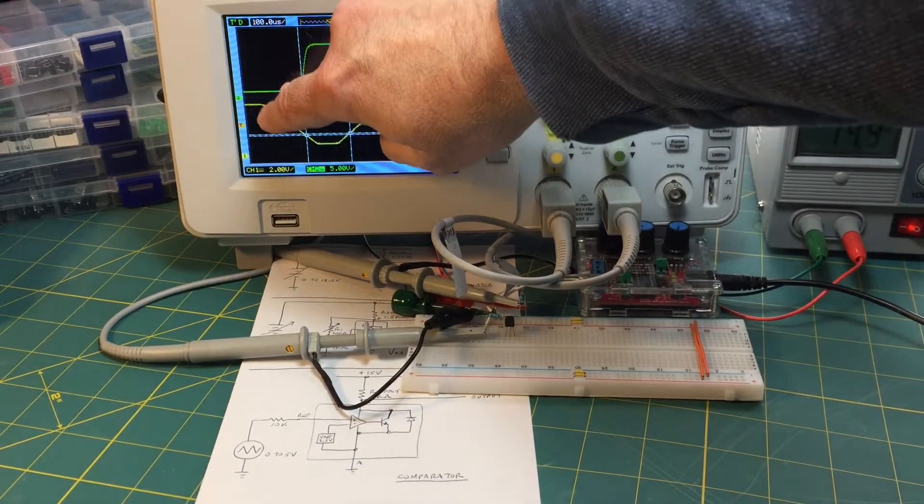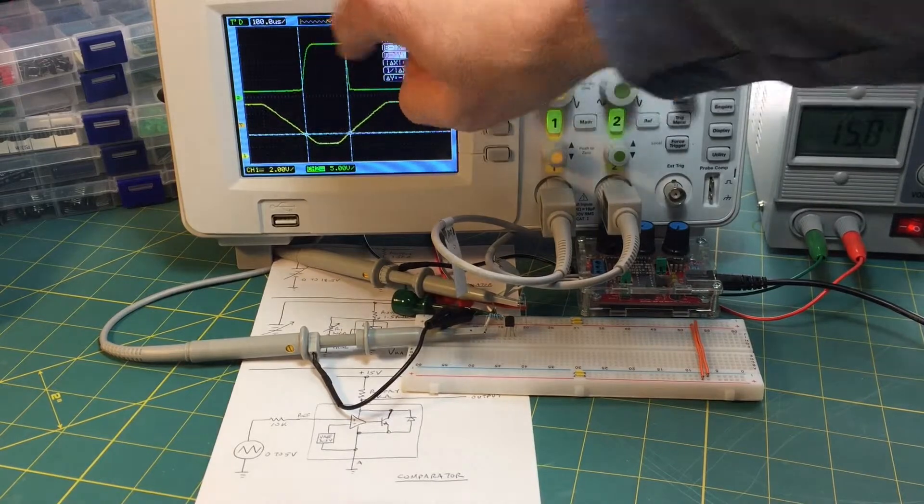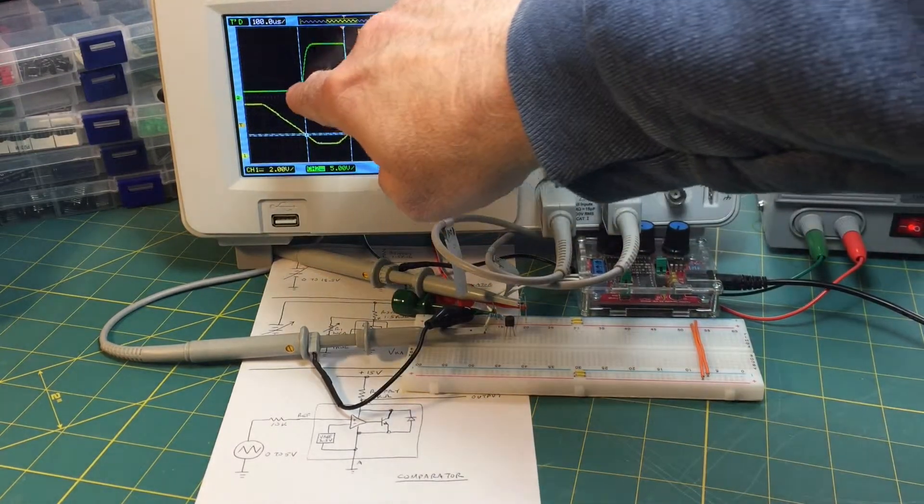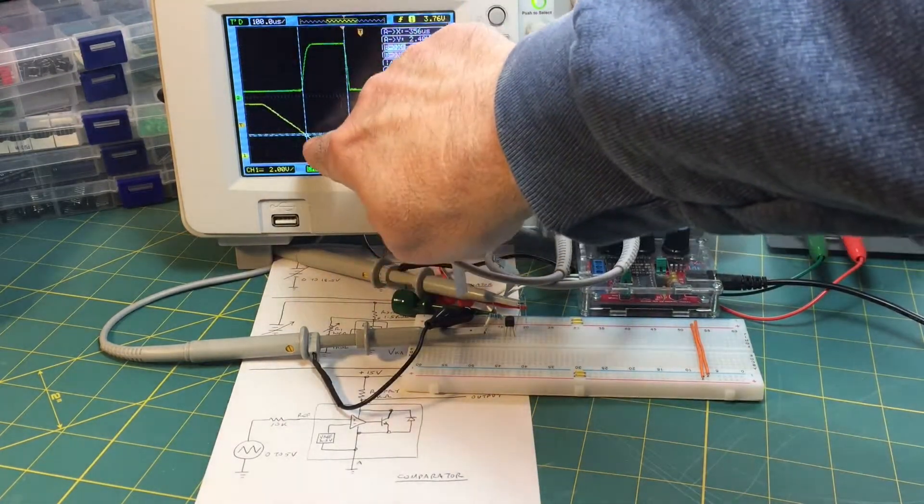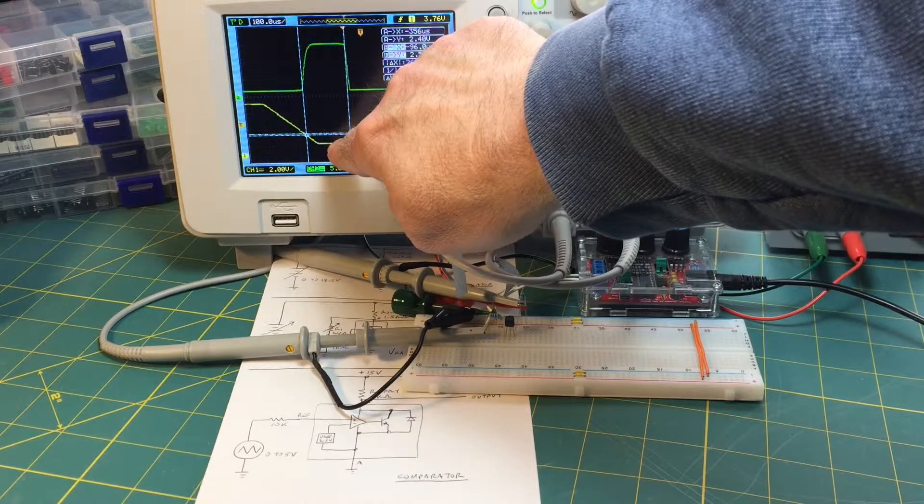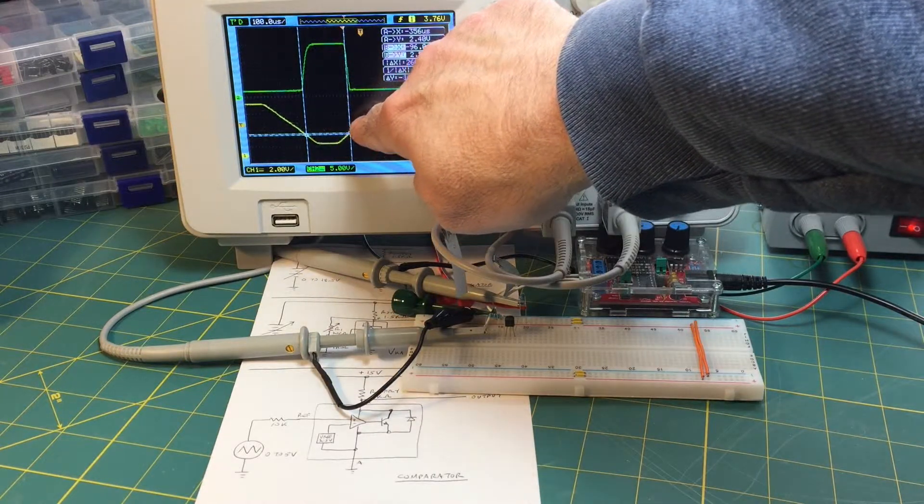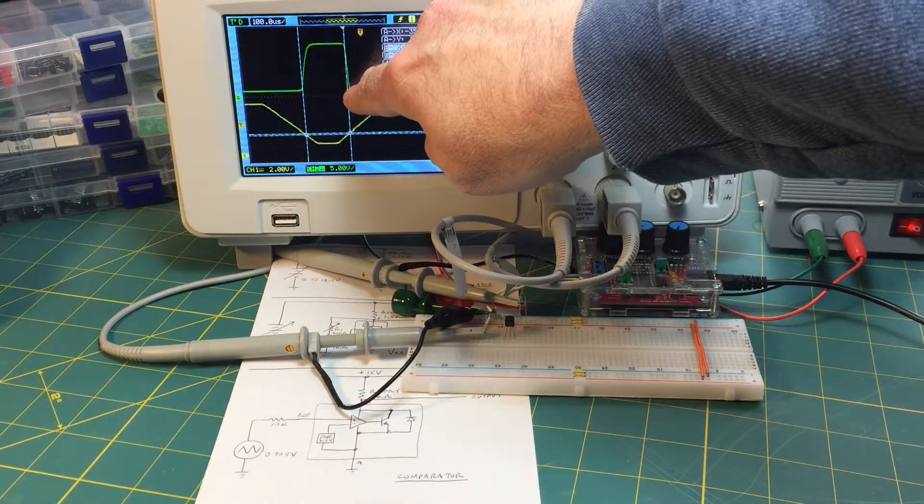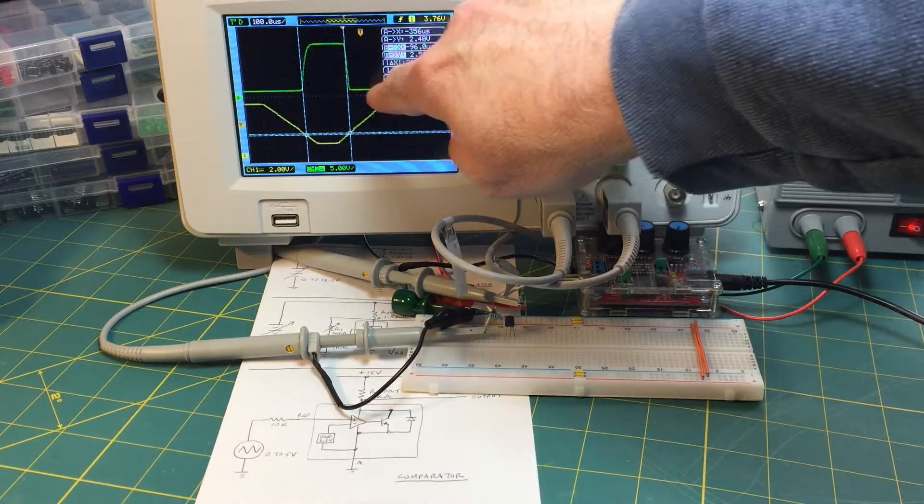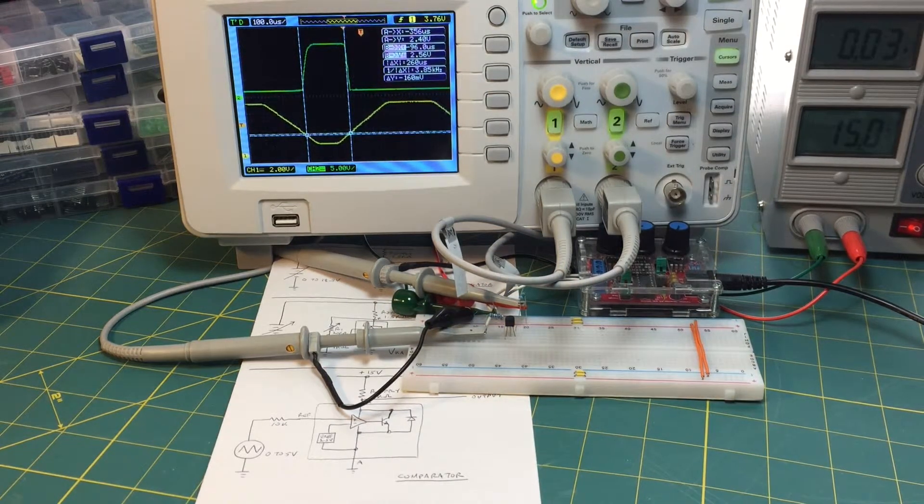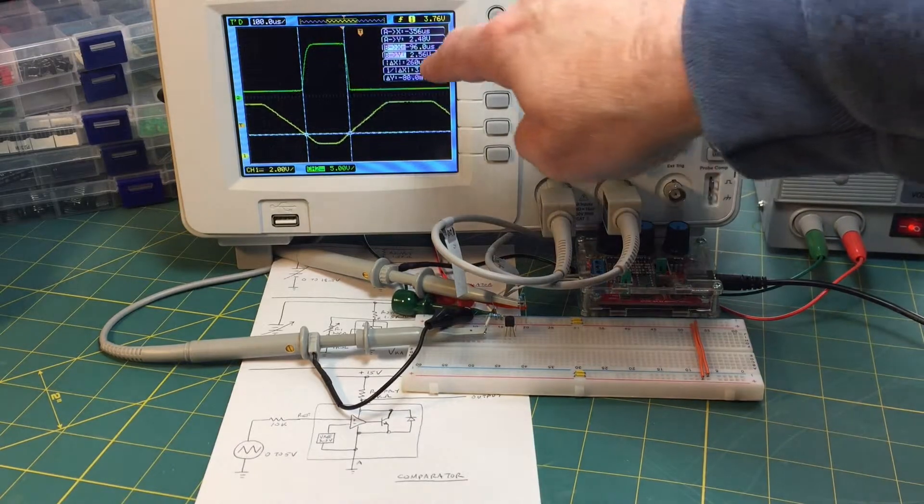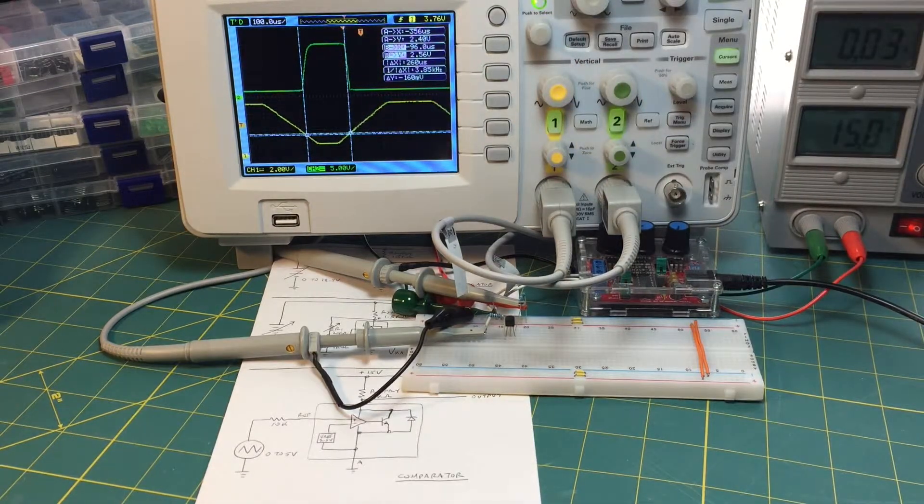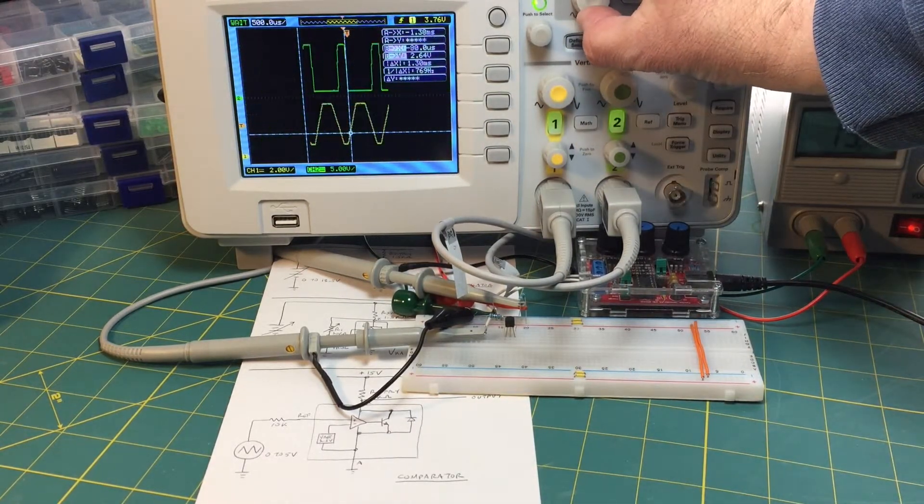When the input signal drops below 2.5 volts the output switches high which is 15 volts, and when the input signal crosses 2.5 volts again the output switches low and low in this case is about 2 volts which I told you earlier would be between 2 and 2.5 volts, it's closer to 2 here. And I'll show you a few more cycles of that.